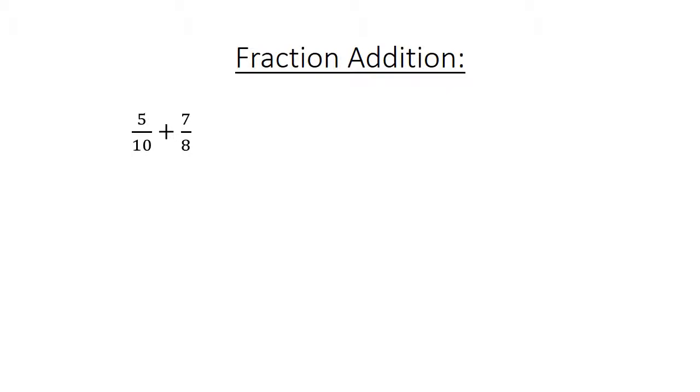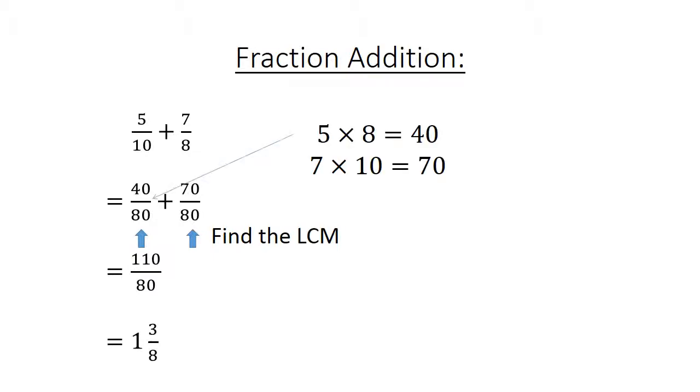Fraction addition. 5 over 10 plus 7 over 8. We find the lowest common multiple, 80. How do we get our 40 over 80? It's 5 times 8 equals 40. And then you have 7 times 10 equals 70. Equals 110 over 80 equals 1 and 3 over 8.